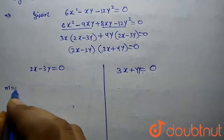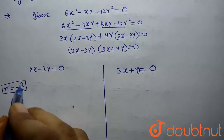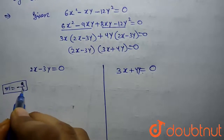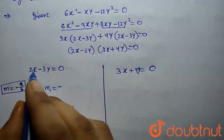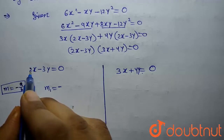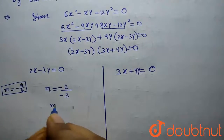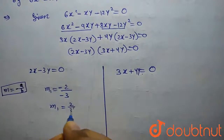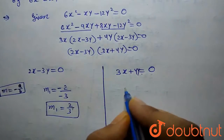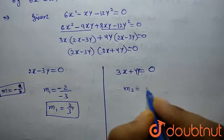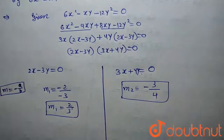To find the slope, the formula is m equals minus a divided by b, where a is the coefficient of x and b is the coefficient of y. So m₁ equals minus 2 divided by minus 3, which gives m₁ equals 2/3 as the slope of the first equation, and m₂ equals minus 3 divided by 4 as the slope of the second equation.